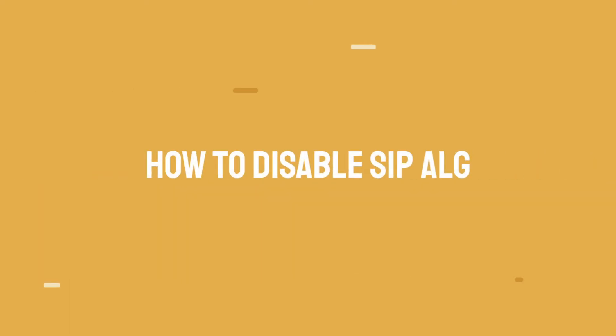Disabling SIP-ALG is quick, easy, and it doesn't include any security risks. How you turn it off depends on the type of modem your business uses. For most routers, you will need to do the following.